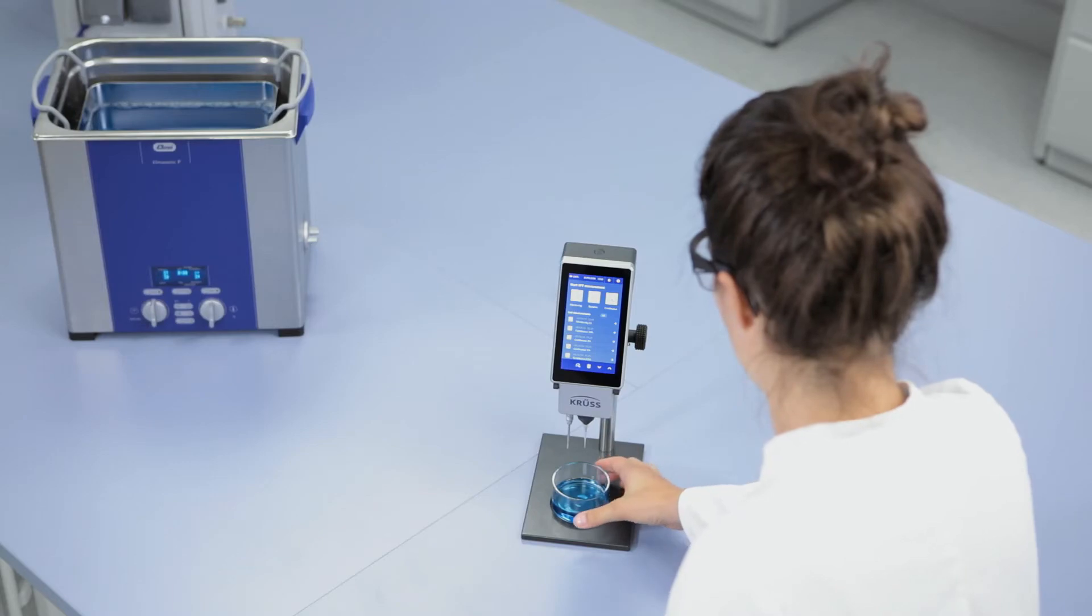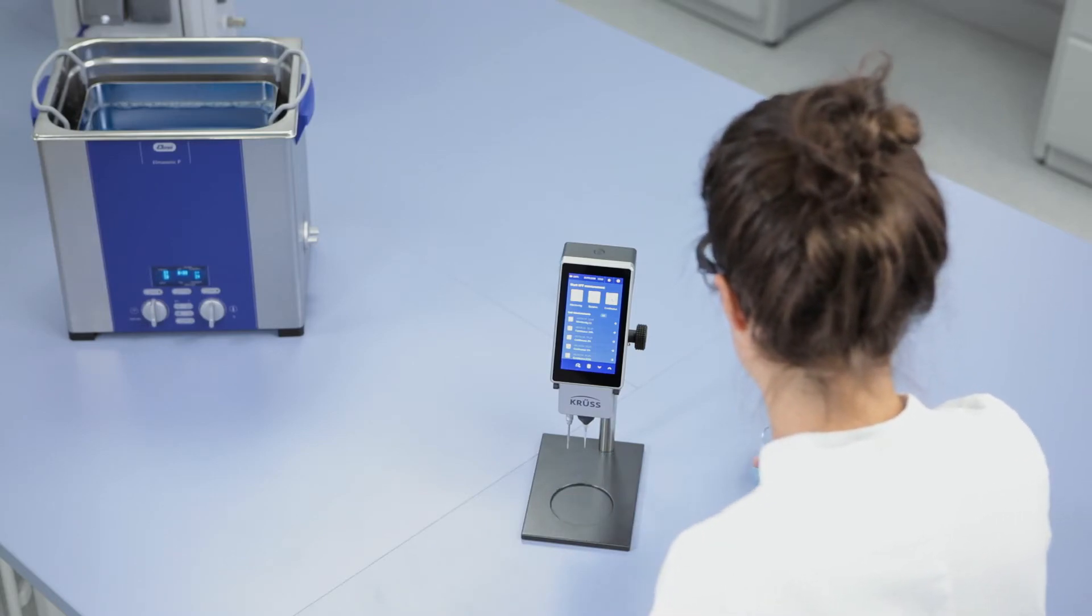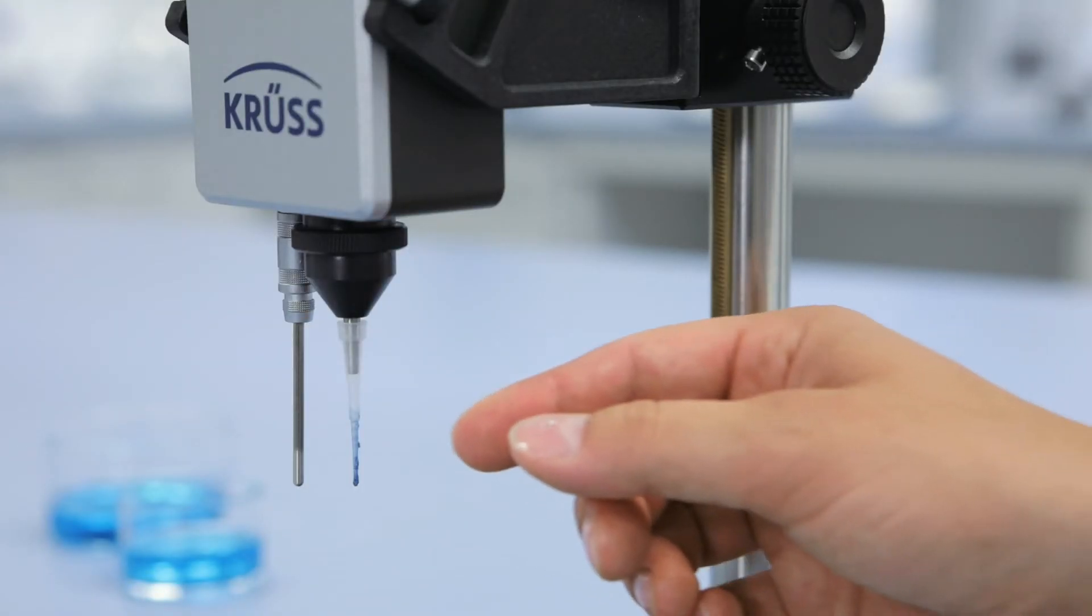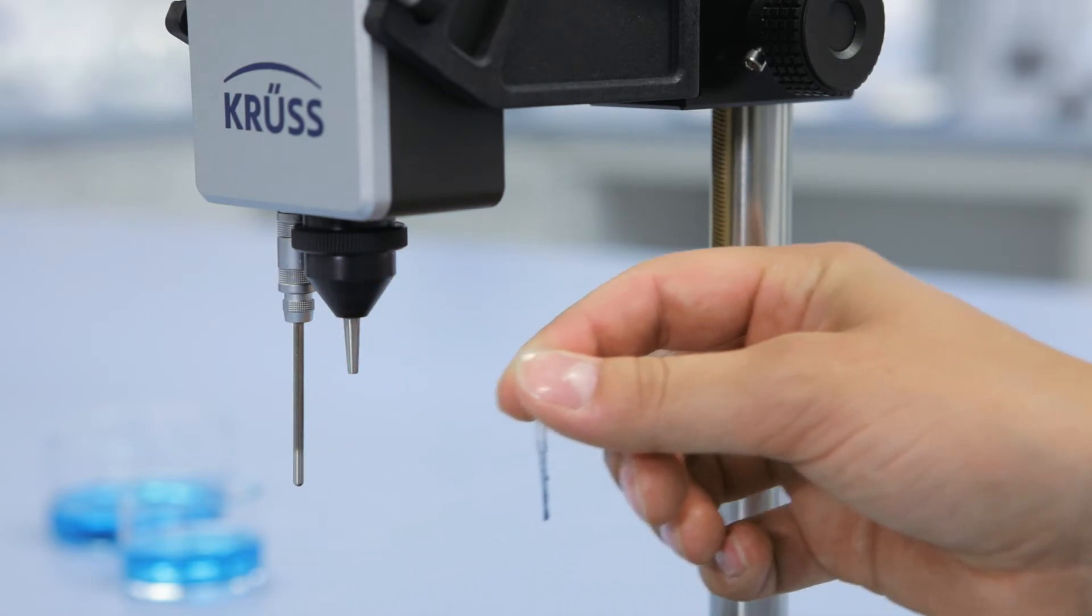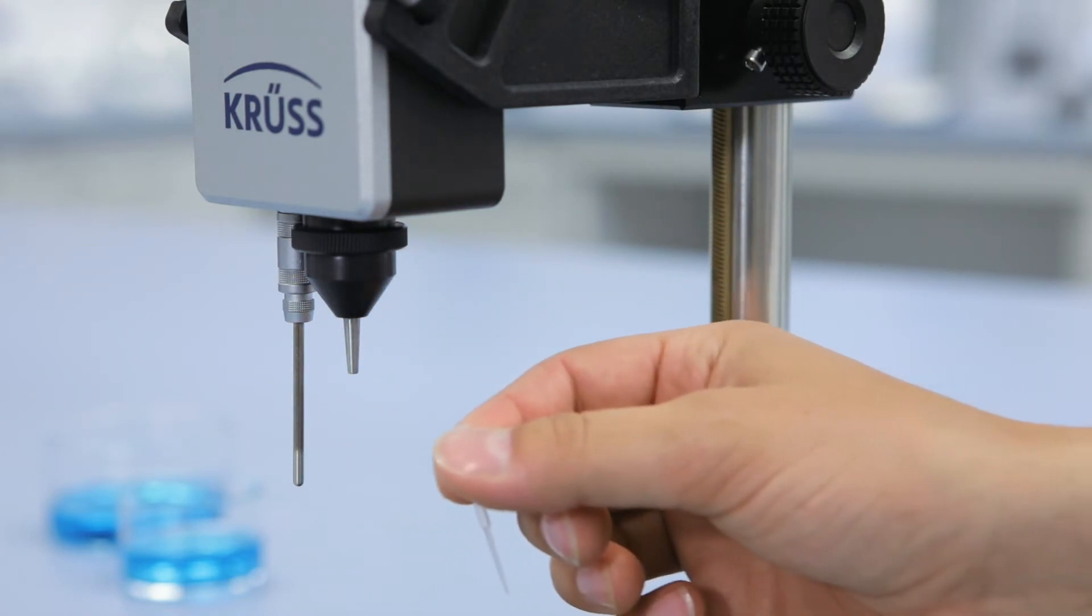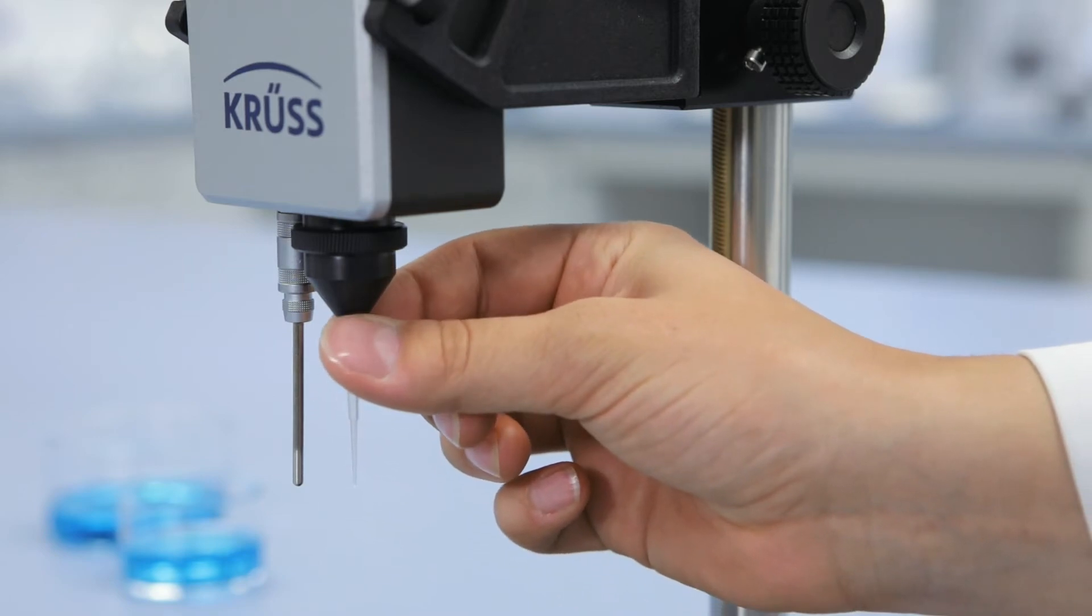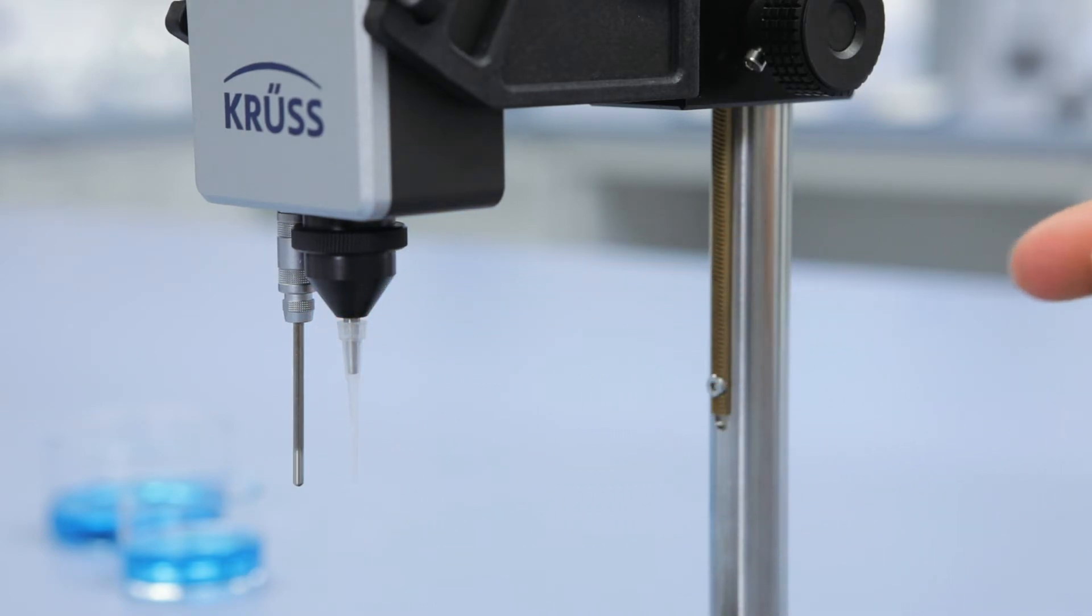But that's not all. The BPT Mobile works with easily replaceable, disposable capillaries, which is an advantage when using highly contaminating samples. This makes the time-consuming cleaning of capillaries a matter of the past.